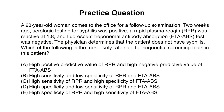Let's end with a practice question. A 23-year-old woman comes to the office for a follow-up examination. Two weeks ago, serologic testing for syphilis was performed using the traditional screen: a rapid RPR was reactive at 1:8, and then a fluorescent treponemal antibody absorption (FTA-ABS) test was negative. The physician determines the patient does not have syphilis. Which of the following is the most likely rationale for sequential screening tests in this patient?